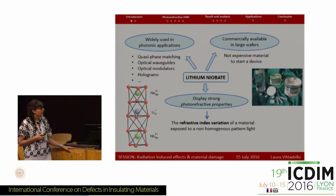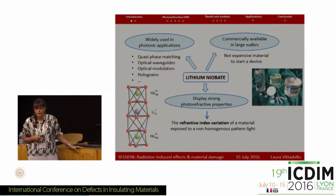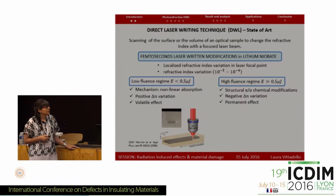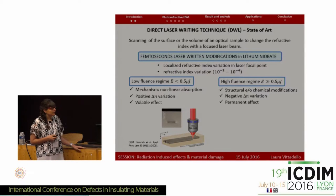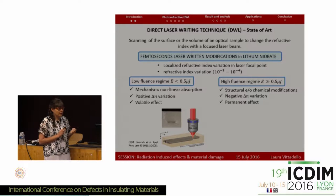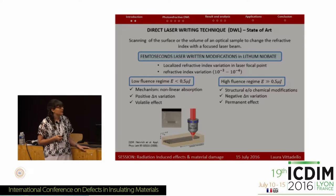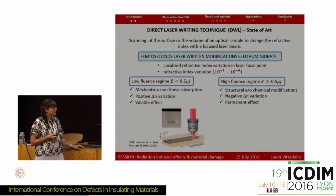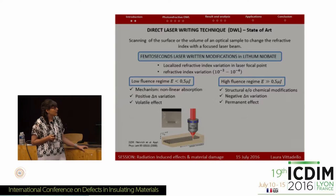We used lithium niobate because of its strong photorefractive properties, which is the ability of the material to change its refractive index when exposed to a non-homogeneous pattern of light. This work deals with a modification of a standard direct laser writing technique. In the state of the art, this consists in the ability to change the refractive index by scanning the surface or volume of the sample with a focused laser beam, applied to lithium niobate using femtosecond lasers. This permits achieving a refractive index variation in the range of 10⁻³ to 10⁻⁴.